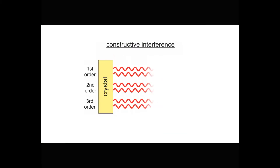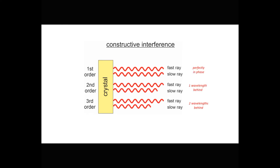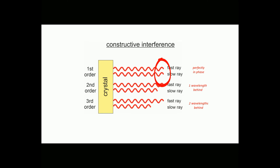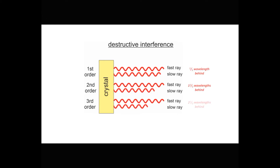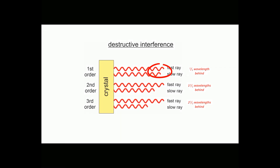There are some additional complications. If double refraction occurs and the waves are in phase when they leave the crystal, it could be that the slow ray and the fast ray are perfectly in phase because there was no retardation. But it could also be that the slow ray is exactly one wavelength behind the fast ray, or two wavelengths, or three or four. All that matters is that the difference between the slow ray and the fast ray has to be an integral number of wavelengths. The same thing applies for destructive interference — waves that are interfering destructively could differ by one-half wavelength, or one-and-a-half wavelengths, or two-and-a-half, and so forth.